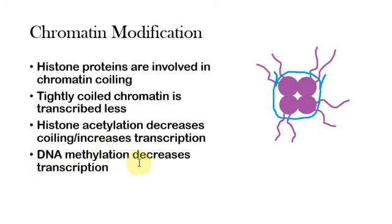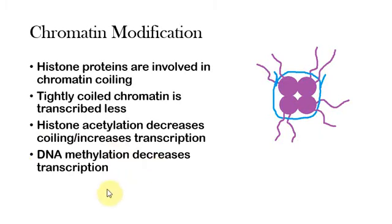Next we have DNA methylation, which is the addition of a methyl group to the DNA within various base pairs. When the DNA is methylated, this decreases transcription because it disguises that DNA from the RNA polymerase and other proteins. So DNA methylation will decrease the transcription of those genes.